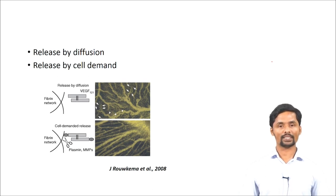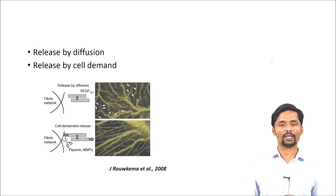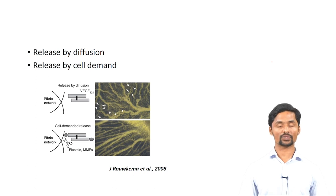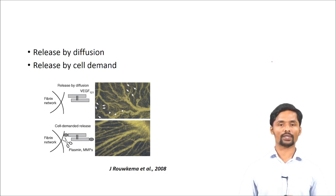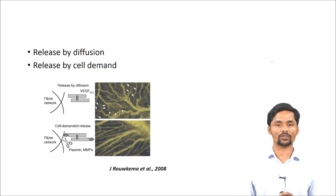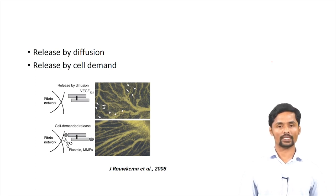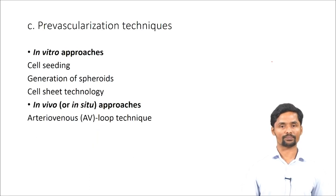The second method is release by cell demand. In this method, you supply growth factors to cells, and these growth factors in turn stimulate the cells to secrete angiogenic growth factors. Thereby, you can control the release of these angiogenic growth factors and achieve a healthy vascular network.